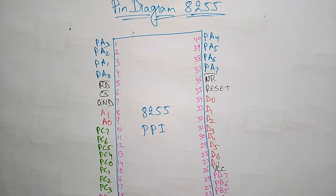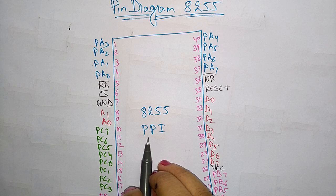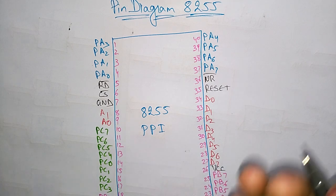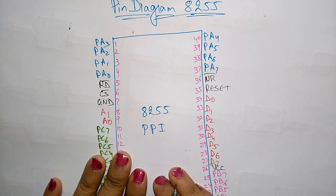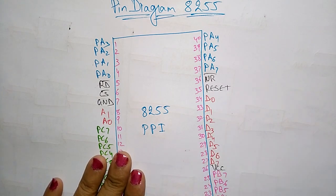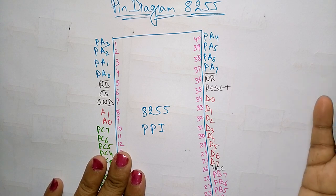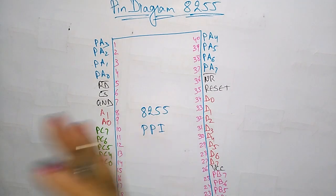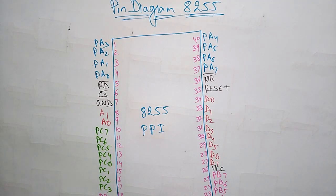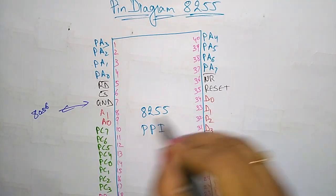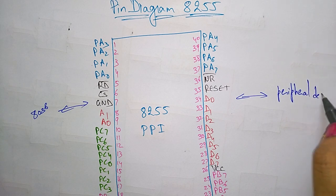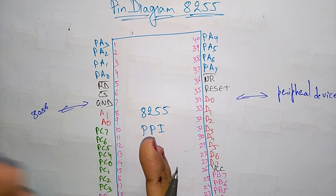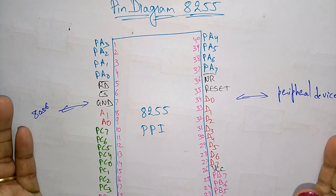Coming to the next topic: the pin diagram of 8255. The 8255 is a programmable peripheral interface — an interfacing circuit connected between the processor and external components. External devices first connect to this peripheral interface, and this interface circuit connects to the 8086 microprocessor. This chip acts as an interfacing circuit between the 8086 microprocessor and external peripheral devices.